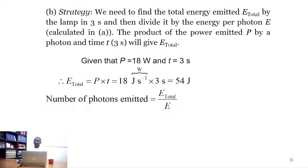The number of photons emitted, therefore, is the total energy emitted by the photons divided by the energy per photon.